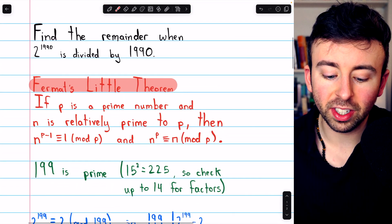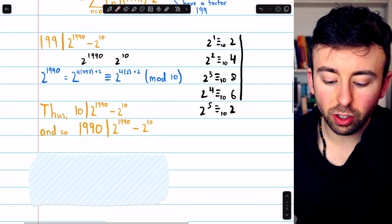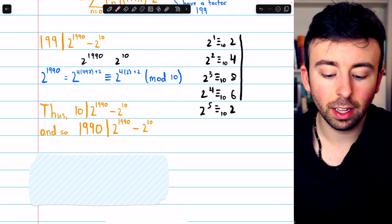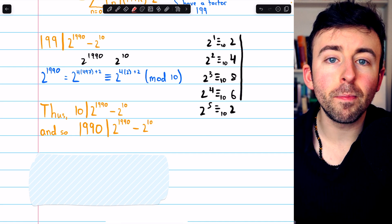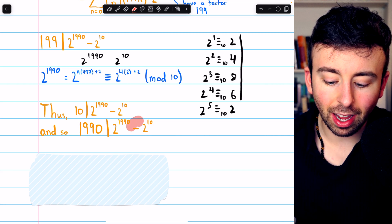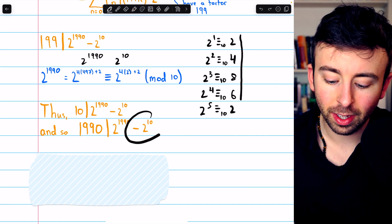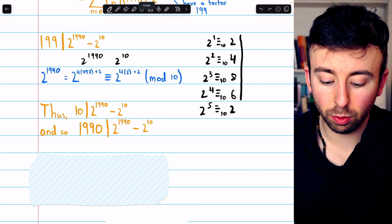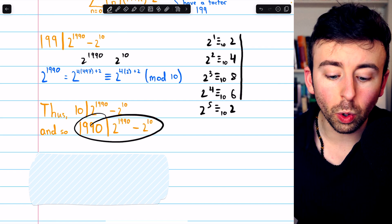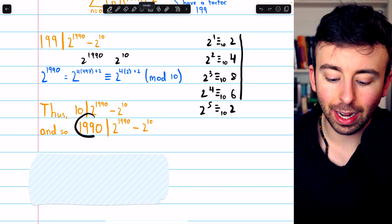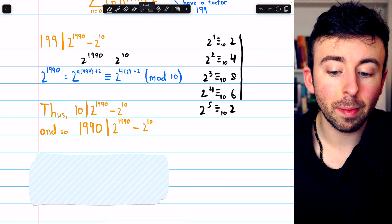And this gives us the answer to our problem. Because remember, the question is about the remainder when 2 to the 1990 is divided by 1990. Well, we know there is no remainder when we divide 2 to the 1990 minus 2 to the 10 by 1990. There's no remainder. So when you look at this, you should think about there being a remainder that we're looking for, but then it just got subtracted away. And now in this situation, there is no remainder. What was that remainder that got subtracted away? It was 2 to the 10. If you subtract it, there's no remainder anymore. Look at that. The difference is divisible by 1990. So the remainder that you would have if you divided 2 to the 1990 by 1990 is 2 to the 10. Because when you subtract it, there's no longer any remainder.